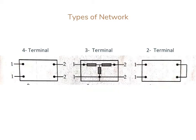There are 3 types of network: 4-terminal network, 3-terminal network, and 2-terminal network. In a 4-terminal network, 2 terminals are for input and 2 terminals are for output. In a 3-terminal network, 1 input terminal and 1 output terminal are joined, so we have 3 terminals. In a 2-terminal network, the 2 output terminals are shorted, and therefore we have 2 terminals.